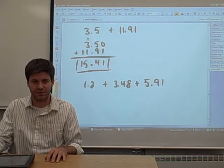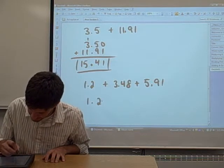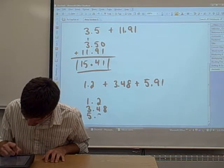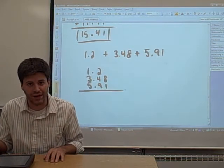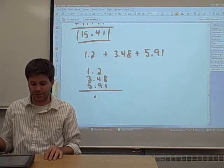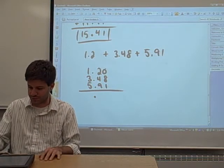So, all you really have to do is make sure all your decimals are lined up. 1.2, 3.48, 5.91. All the decimals are lined up. When we add these three numbers together, your decimal in your answer is going to be down here. If you'd like, you can fill in any empty spaces with zeros to the right of the decimal.